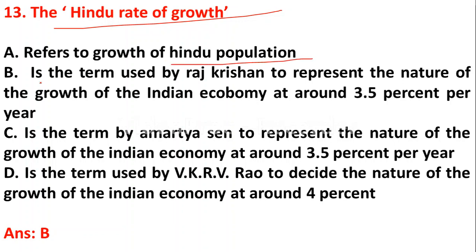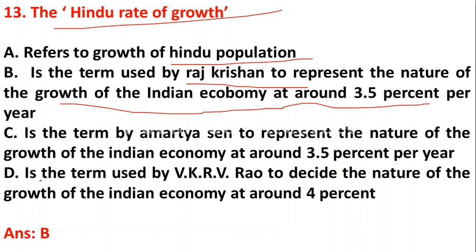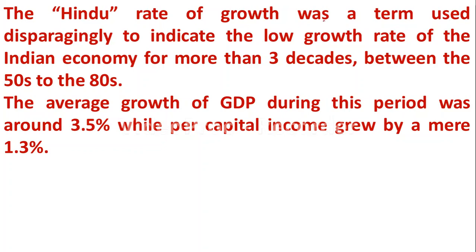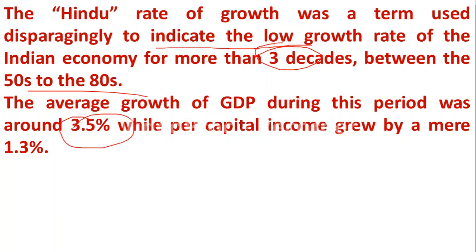Question 13: The Hindu rate of growth — A) refers to growth of Hindu population, B) is the term used by Raj Krishna to represent the nature of growth of the Indian economy at around 3.5% per year, C) is the term by Amartya Sen to represent growth of Indian economy at around 3.5%, D) is the term used by VK RV Rao to describe growth around 4.5%. The answer is B — the Hindu rate of growth is the term used by Raj Krishna to represent the nature of growth of the Indian economy at around 3.5%. It indicated the low growth rate of the Indian economy for more than three decades between the 1950s and 1980s, when the average GDP growth was 3.5%.